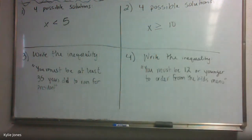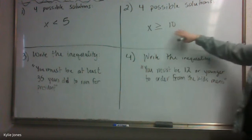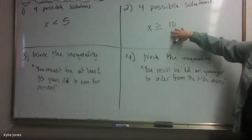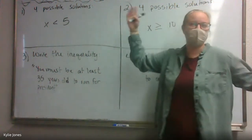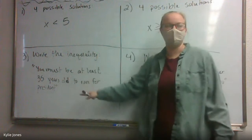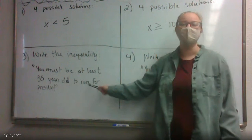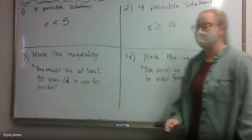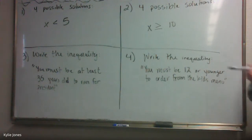So number one, you are giving me four possible solutions — what can x be to make that inequality true? Same with number two, four possible solutions that make this true. Number three, write the inequality — something like x is less than, greater than, less than or equal to, whatever. You must be at least 35 years old to run for president — write that inequality. Number four, you must be 12 or younger to order from the kids menu. I'm going to give you guys about three minutes on these.